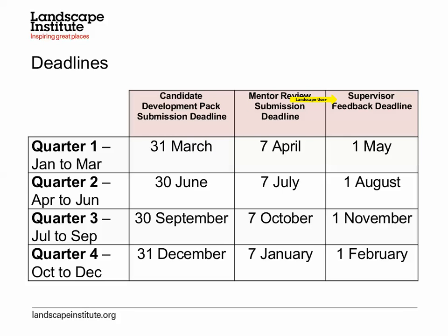The supervisor deadline is basically a month after your own deadline — the first of the second month of the next quarter. Supervisors have roughly four to five weeks after you submit, and about three to four weeks after the mentor submits, to read through all submissions. Supervisors have around 20 candidates each, so they read candidate submissions and mentor reviews, then write individual feedback for each candidate and mentor.